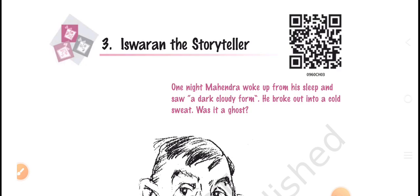Ishwaran would start a story with an introduction, laying the background of the character followed by the story. He described simple incidents in such detail, with actions and gestures, that it would create suspense in the listener's mind. Once he told Mahendra a story about an elephant that had escaped from the jungle and entered the town.